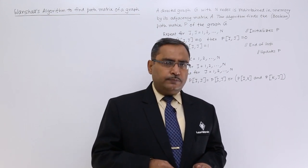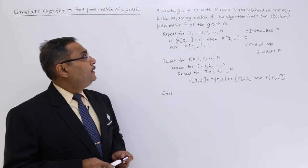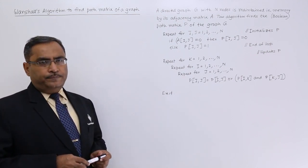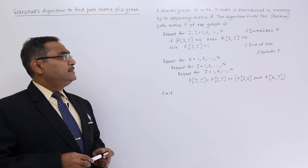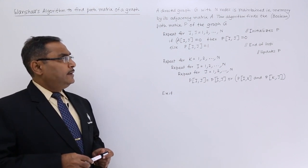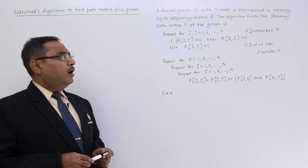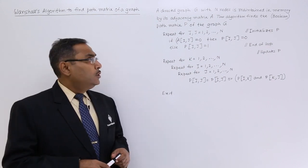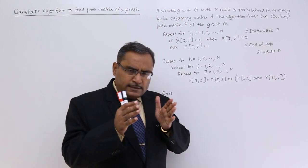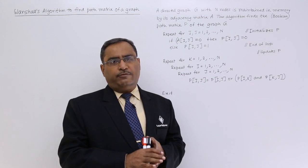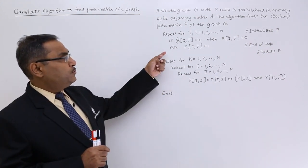Look at the algorithm. Now, how does it work? A directed graph G with n nodes is maintained in memory by its adjacency matrix A. The algorithm finds the boolean path matrix P of the graph G. From the adjacency matrix, how can I get the respective boolean matrix? It can be obtained in this way.